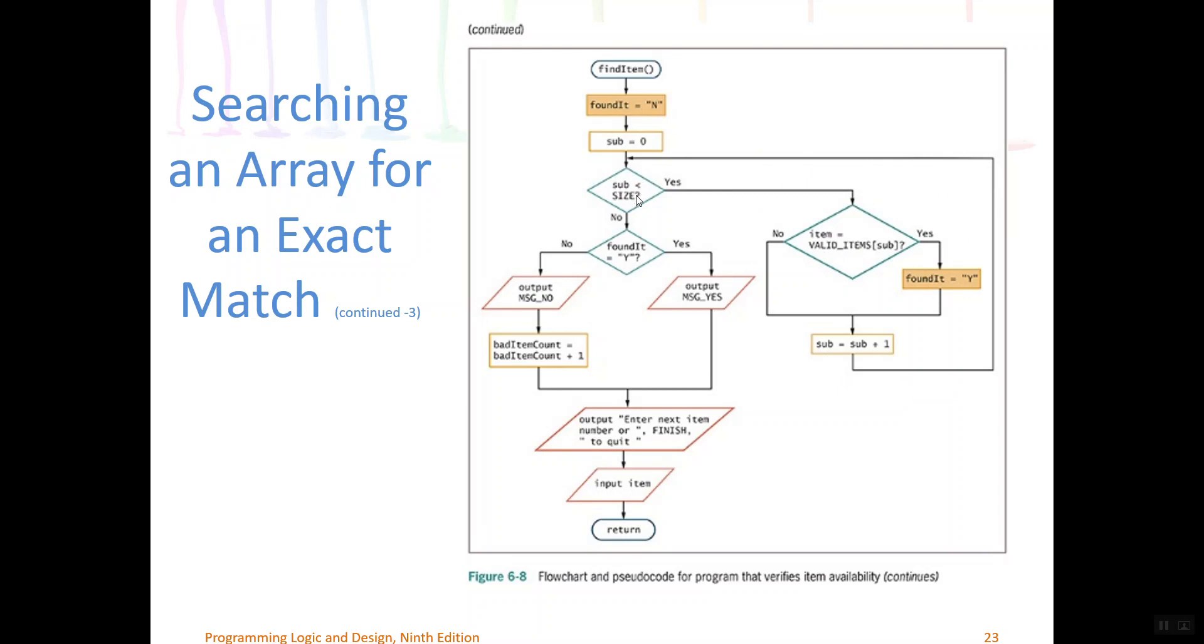So eventually after we go through all the iterations of this loop, sub will no longer be less than six. Sub will finally be incremented to seven. So this test will fail. The loop will end and we'll enter in a selection structure, in other words, an if statement that says was foundIt equal to Y. In other words, did we find it? If we did, output the positive message. Otherwise, output the negative message that says item not found. And if the item wasn't found, we'll do one more thing. We're going to increment the bad item count by one. Remember I said that this variable we're going to use in output at the very end of the program to show how many times they searched for an item that wasn't in our list.